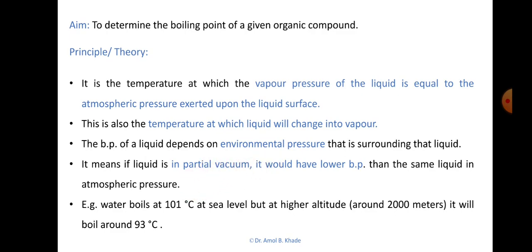If you take the same water at a higher altitude — say 2000 meters above sea level — it will start boiling earlier, at around 93°C, because the atmospheric pressure is reduced at higher altitude. Conversely, if the atmospheric pressure is higher than normal, the liquid will require more temperature to boil than its actual boiling point.